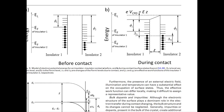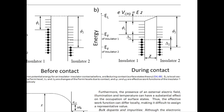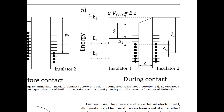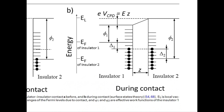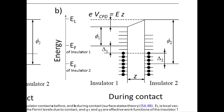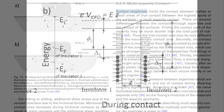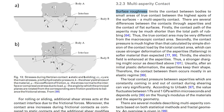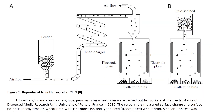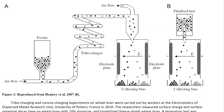When two materials come into contact and then separate, a static charge can be generated on their surfaces. By applying an electric field, particles with opposite charges can be attracted to each other, while particles with the same charge will repel each other.